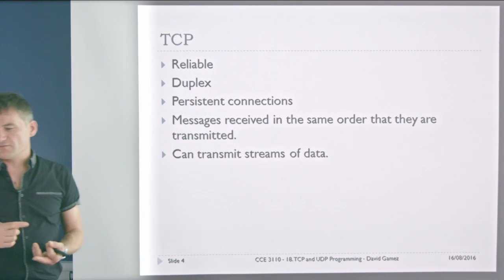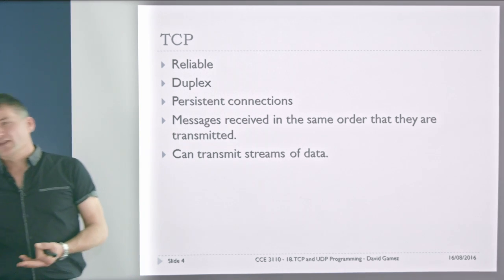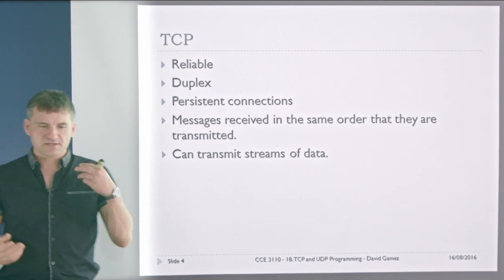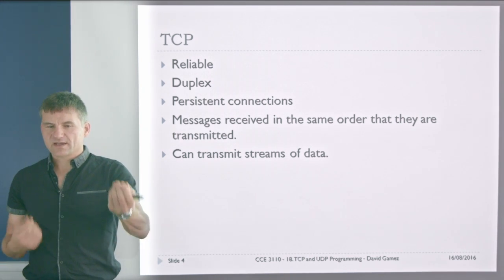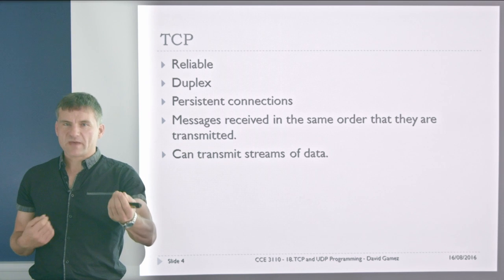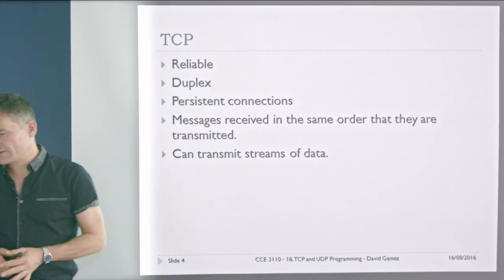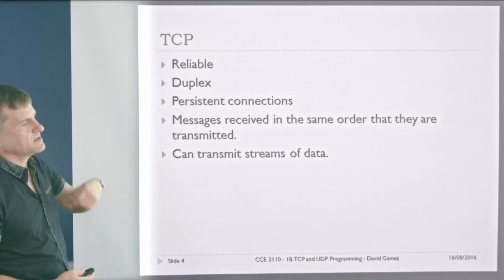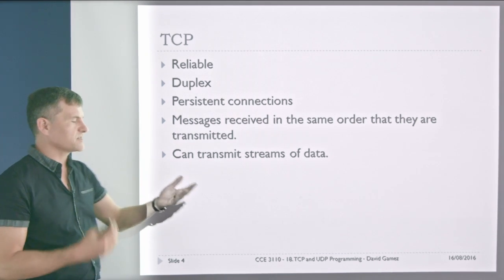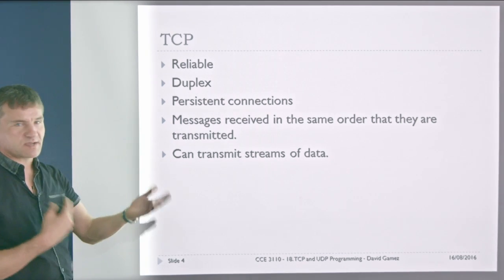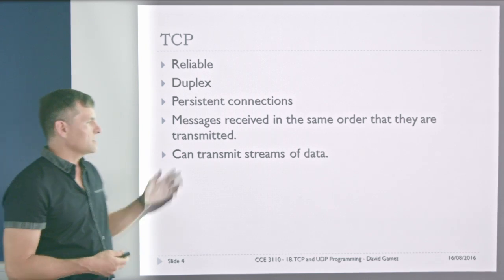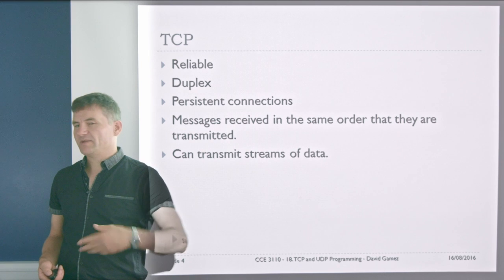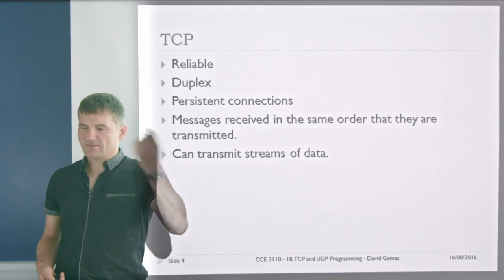TCP is reliable and full-duplex — you can talk in both directions. You have persistent connections: I connect to the server and that connection remains open until we close it or one side falls over and dies. There is message ordering, so if you send message one and then a second message, the ordering is guaranteed over TCP. You can also work with streams of data — you can write streams to the TCP socket and read them from the other end.